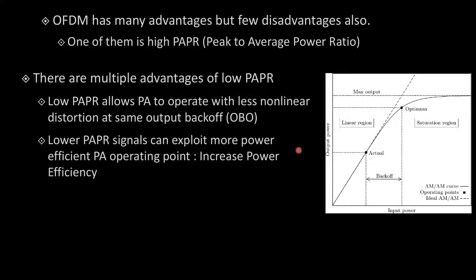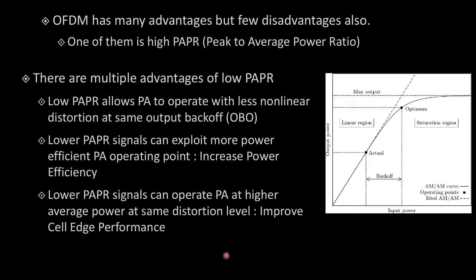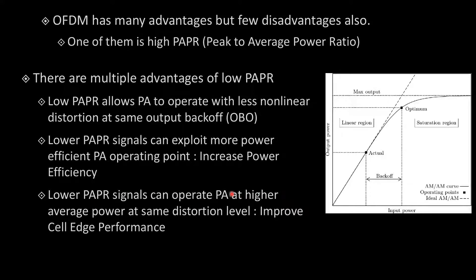Other than that, low PAPR signals can exploit a more power-efficient PA operating point, so it increases power efficiency. Also, a low PAPR signal can operate the PA at higher average power at the same distortion limit. Because if the PAPR is low, instead of operating my PA at a lower power, I can operate my PA at a higher power, since the probability of going into the saturation region will be lesser. This actually improves cell edge performance, because I can operate my PA at higher power.